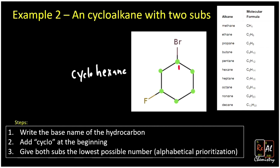We're not done thinking through the numbering because we have a couple of options. I could number them counterclockwise — one, two, three, four, five, six — or I can number them clockwise — one, two, three, four, five, six. Which numbering do I want to use? With the yellow numbering I'd have bromine at one and fluorine at five; with the red numbering I get one and three. Clearly the red numbering gives me lower numbers, and that's the one I'm going to use. The yellow numbering is wrong — we're going to use the red numbering.